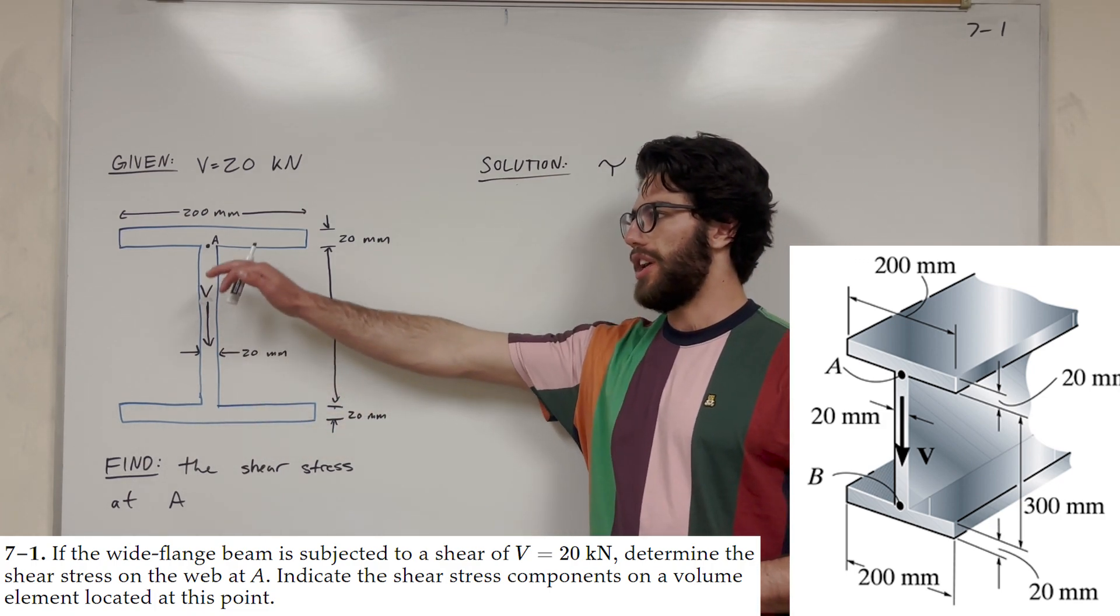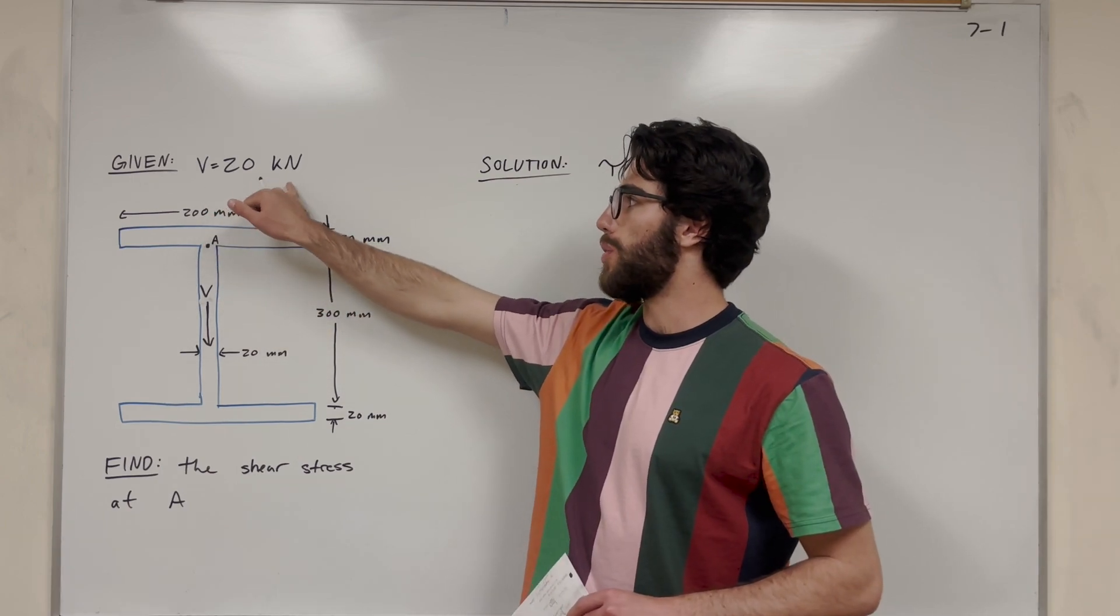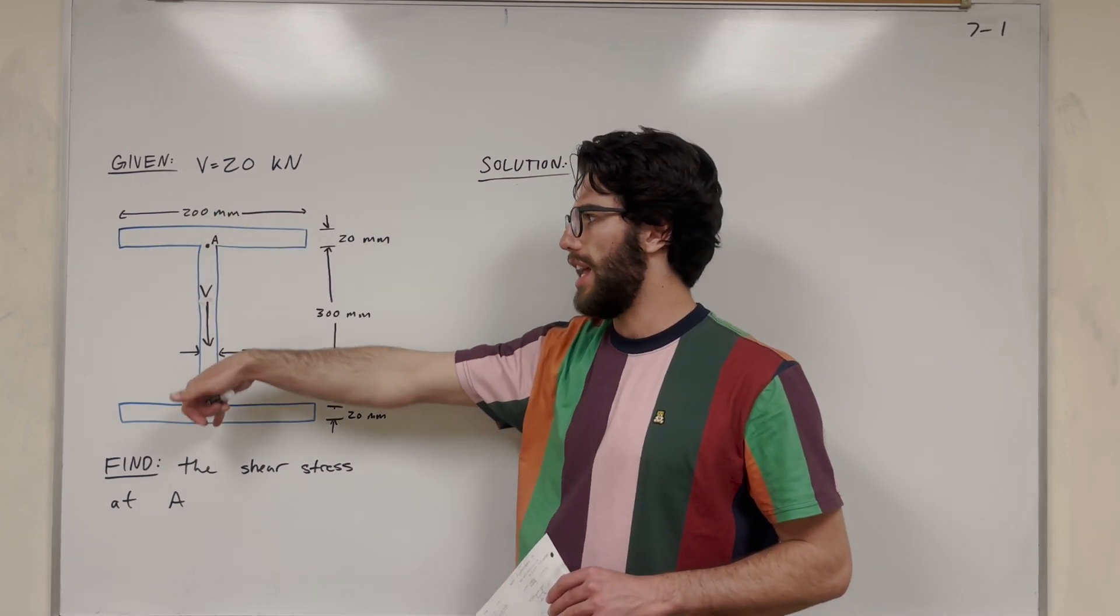We're given this cross-sectional area of a beam, and we're given that we're applying a shear force of 20 kilonewtons. So it's just being pushed downward here.